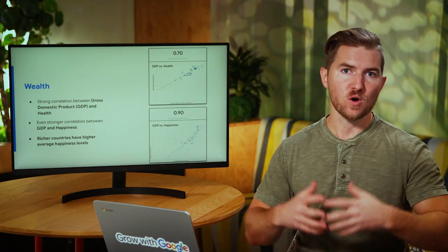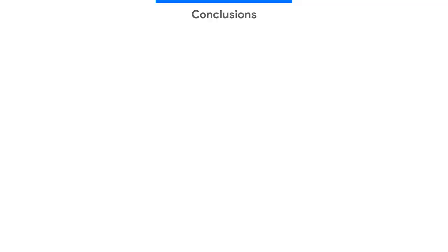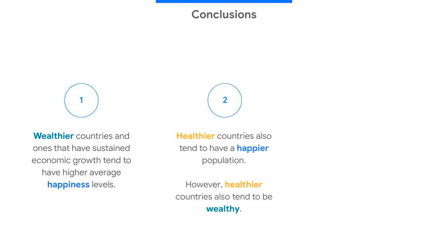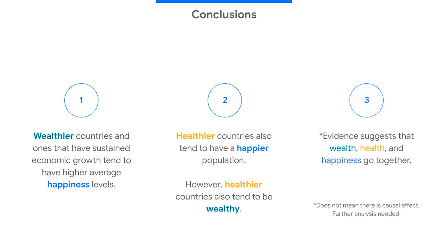This is a good transition to the overall conclusion of your entire presentation. Directing your audience through just the text you want them to look at: your first conclusion — wealthier countries and ones that have sustained economic growth tend to have a higher average happiness level. Your second conclusion — healthier countries also tend to have a happier population; however, healthier countries also tend to be wealthy. And finally, this is where you take it home: our evidence suggests that wealth, health, and happiness all go together. It's important to also discuss any caveats or future analysis needed. We've said the evidence suggests they all go together, but that does not mean that one causes the other — so there needs to be future analysis to understand any causal effects between them.